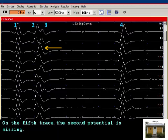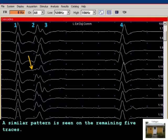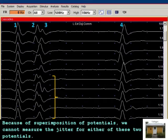On the fifth trace, the second potential is missing. This demonstrates increased jitter and blocking. A similar pattern is seen on the remaining five traces. Because of superimposition of potentials, we can't measure the jitter for either of these two potentials.